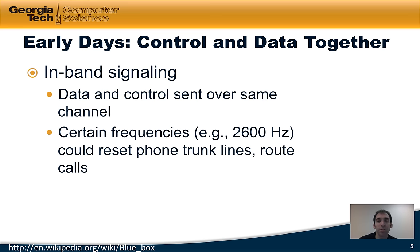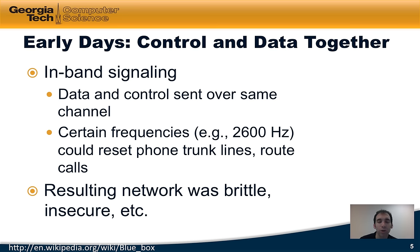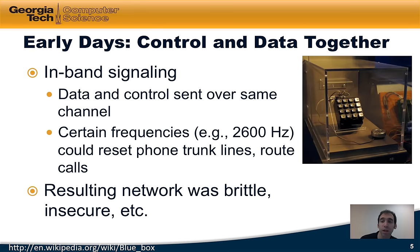While in-band signaling offered some advantages in simplicity, the resulting network turned out to be fairly brittle and insecure. Here's a picture of Steve Wozniak's Blue Box — a device that hobbyists developed to send signals, pulses, and frequencies over the phone network's channel to essentially take control of it. This box could reset a phone trunk line, route phone calls to a particular place, and so forth.